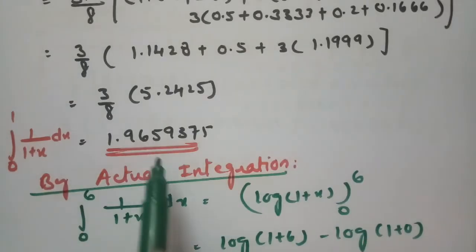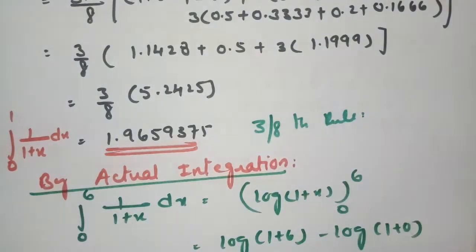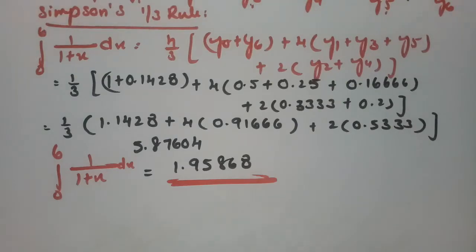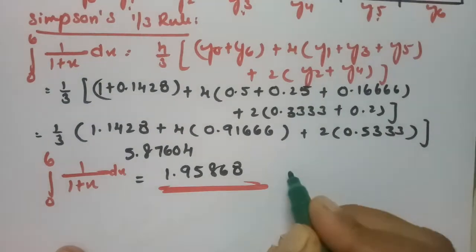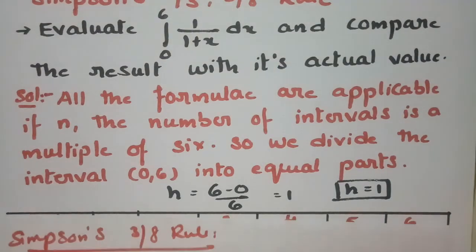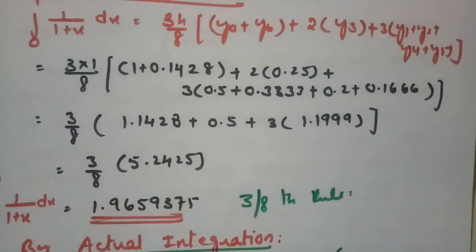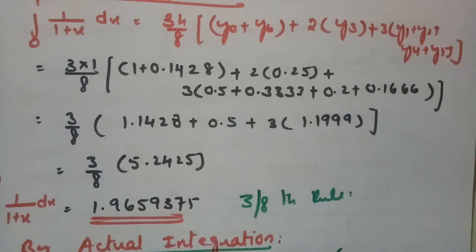Comparing: the actual value is 1.945910, Simpson's three-eighths rule gives 1.9659, and Simpson's one-third rule gives 1.95868. Both numerical results are very close to the actual value. Thank you for watching and staying till the end. I will be uploading many more videos — please watch, practice, and share with your friends if you found it helpful. Please subscribe to this channel.